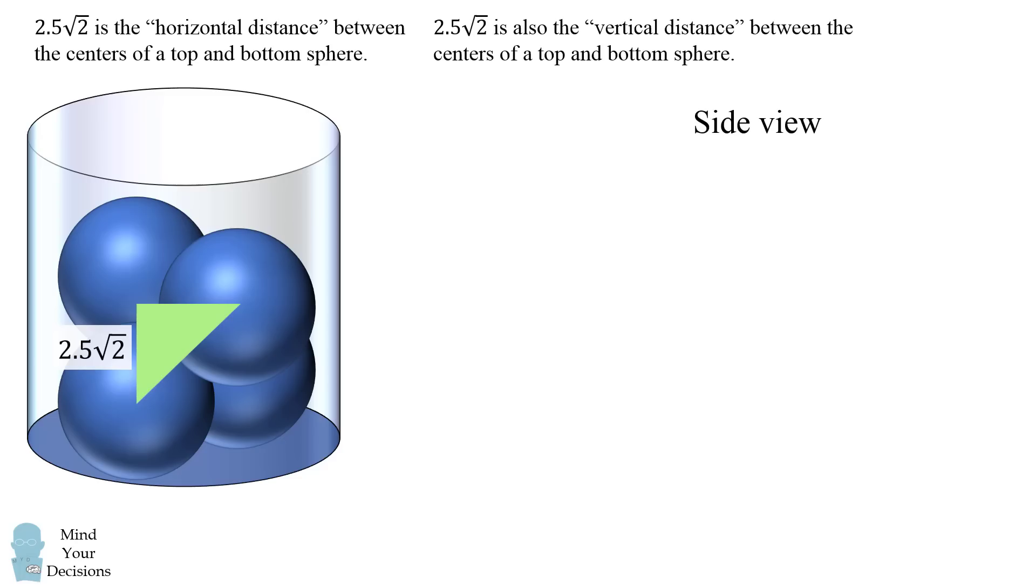So we can now figure out how high the four balls are in the glass. If we look from the side, we'll end up with a sphere on the bottom layer, and then we'll have two spheres on the top layer as follows. And we want to know how tall are these spheres from the bottom of the glass to the top of the glass.